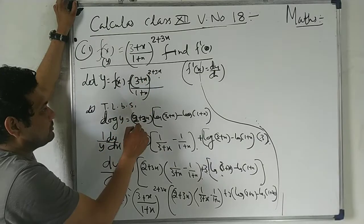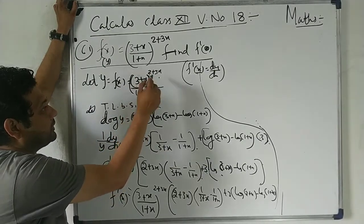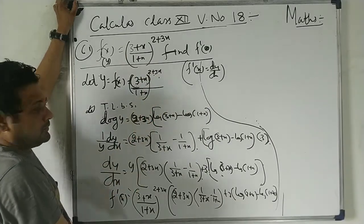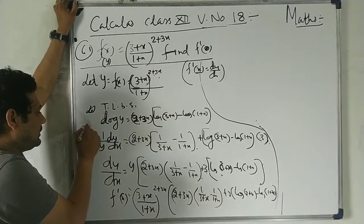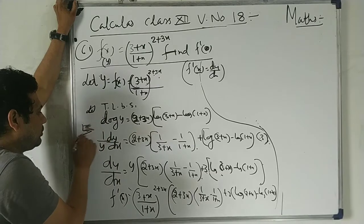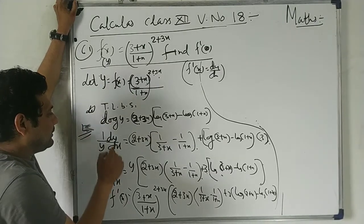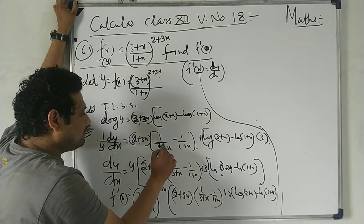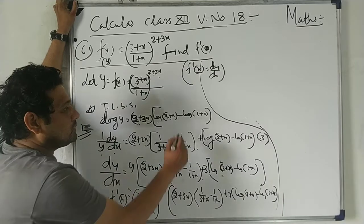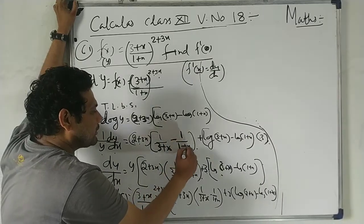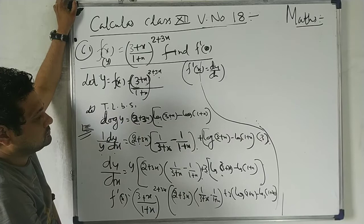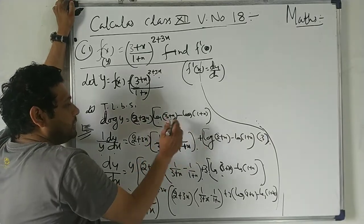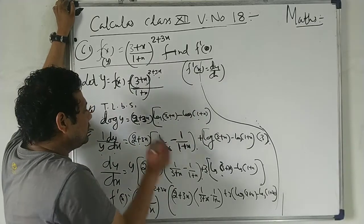Taking log both sides: log y = (2+3x) × log(3+x) — using log division rule — minus log(1+x). Now differentiating both sides: (1/y)(dy/dx) = (2+3x) × [1/(3+x)] × 3 + log(3+x) × 3 minus [1/(1+x)]. Bahar mein log(3+x) bahar mein minus log(1+x) — understood.